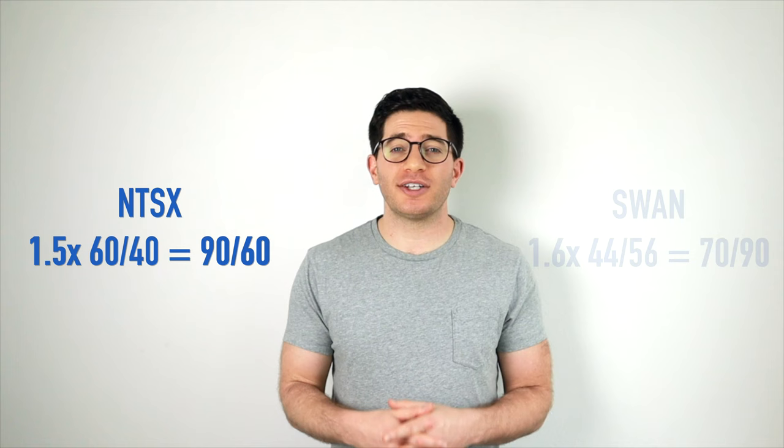Also keep in mind that WisdomTree's stated use case for NTSX is to use it to make room for other assets. That said, these funds are pretty similar. In terms of exposure, NTSX is 1.5 times 6040 for effective 9060, and SWAN is roughly 1.6 times 4456 for effective 7090.